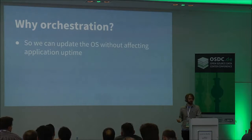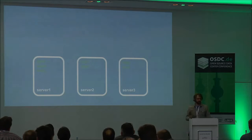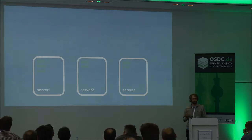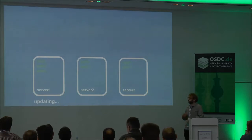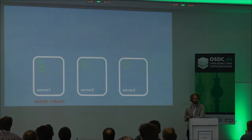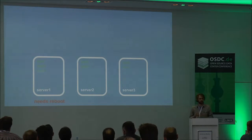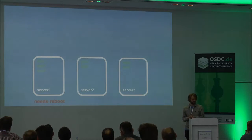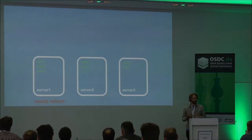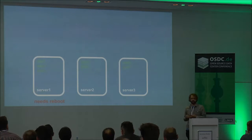Now I'll talk about orchestration and where that fits in. The basic idea is that you have a cluster of servers, each running some applications — apps one through seven in this case. The operating system is automatically updating with no intervention from the administrator. Server one pulls down an update, applies it to the file system, and decides it needs to reboot. To update the kernel, we need to do a full reboot to get into the new file system. We use a full reboot for consistency across environments, whether you're running in your own data center or in AWS.